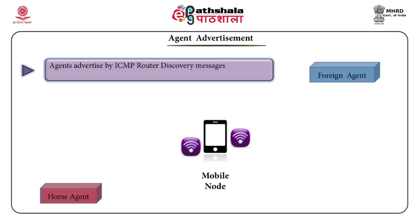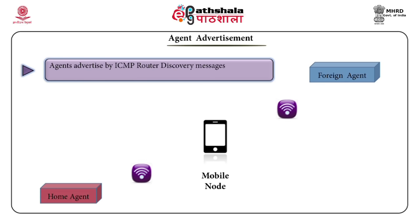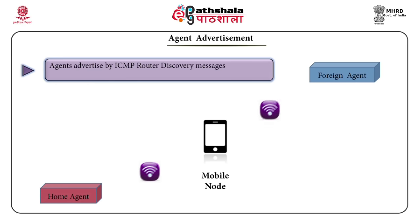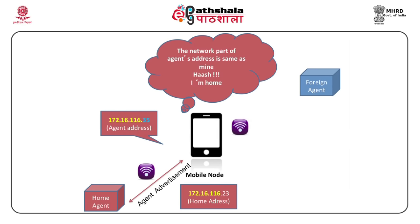The inventors of mobile IP decided that the same procedure can be used to discover the home agent and the foreign agent. So, home agents and foreign agents periodically broadcast agent advertisements in the form of ICMP messages. The mobile node receives that message and observes the address part of the sender.